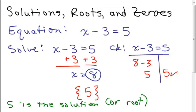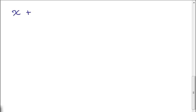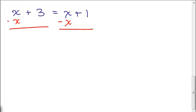This is called a linear equation — X minus 3 equals 5 — because the exponent on the variable is to the first power. When we have a linear equation, we might get one solution, but we definitely will not get more than one solution. Here's an example where you might get no solution: X plus 3 equals X plus 1. If I subtract X from both sides, I get 3 equals 1, which is nonsense. So this equation has no solution.